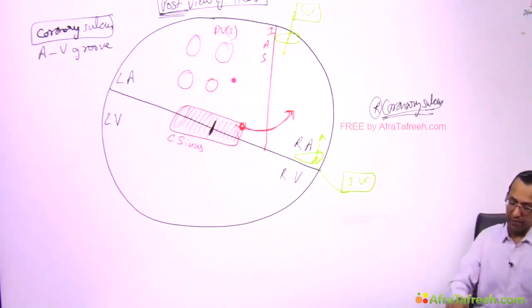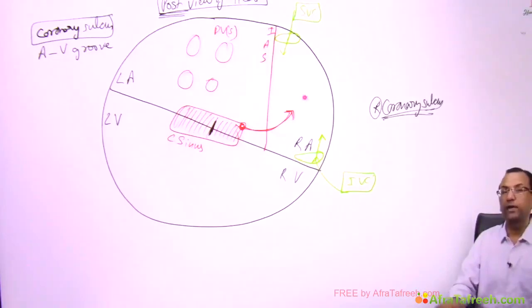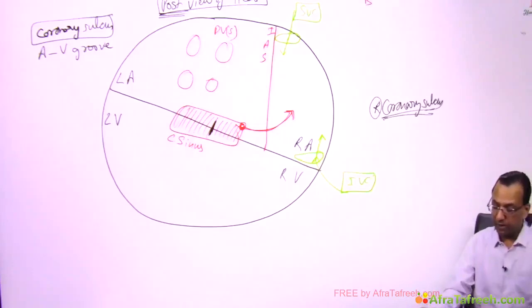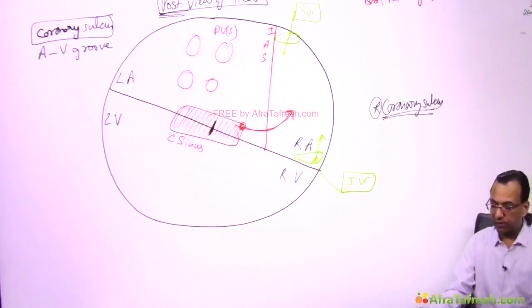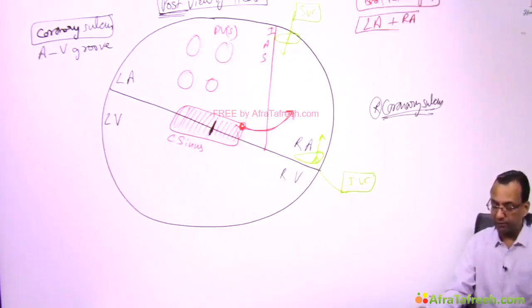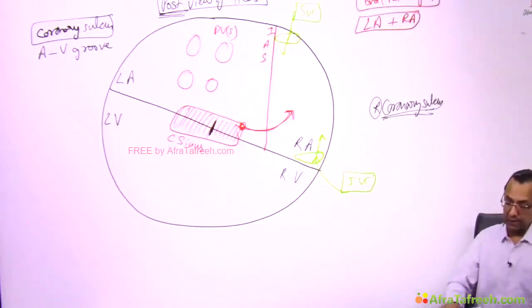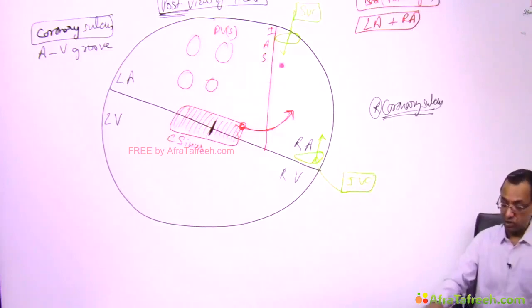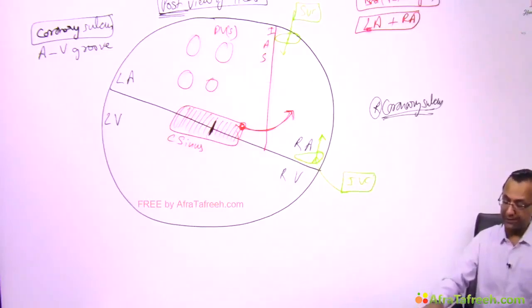The left atrium and right atrium together form the base, or posterior surface, of the heart — mainly the left atrium with a minor contribution from the right atrium.